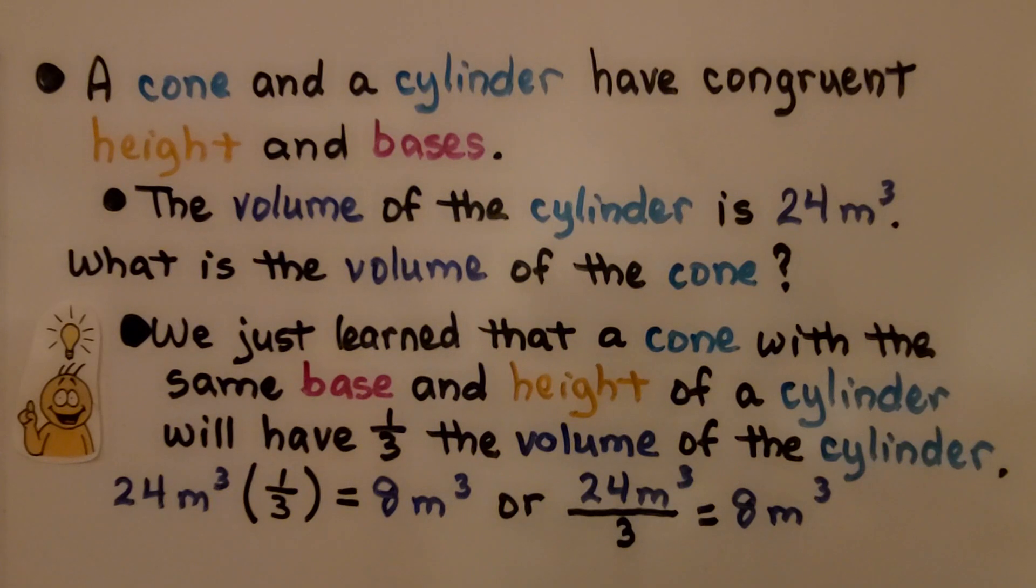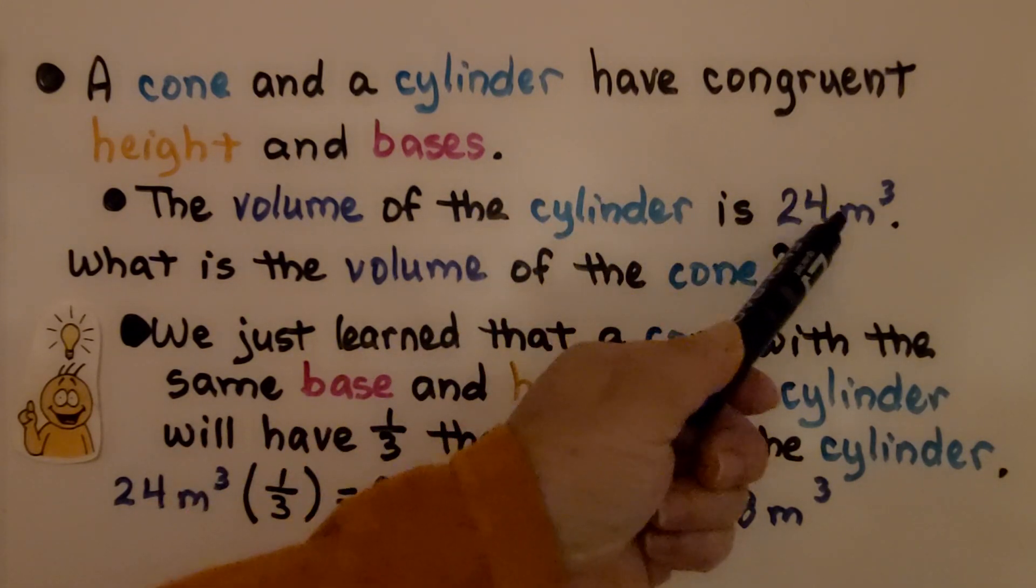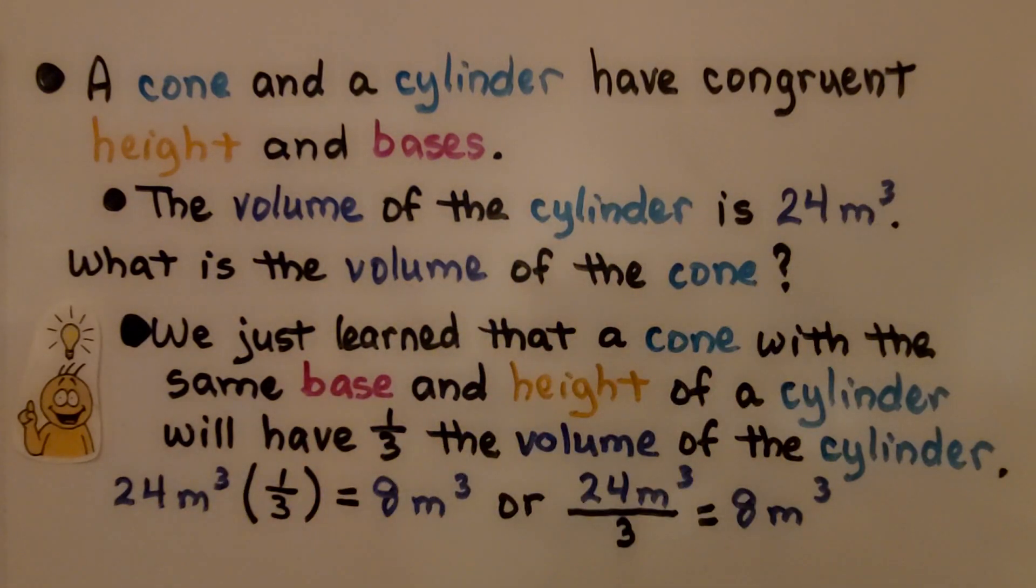A cone and a cylinder have congruent height and bases. The volume of the cylinder is 24 cubic meters. What's the volume of the cone? A cone with the same base and height of a cylinder will have one-third the volume of the cylinder. We need to find 24 cubic meters times one-third or divided by 3. The cone is 8 cubic meters.